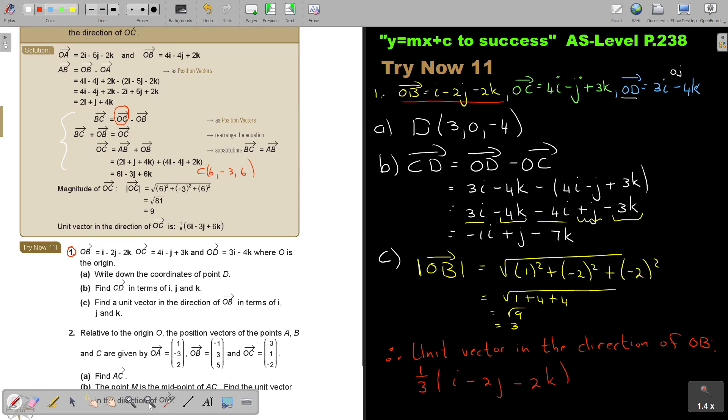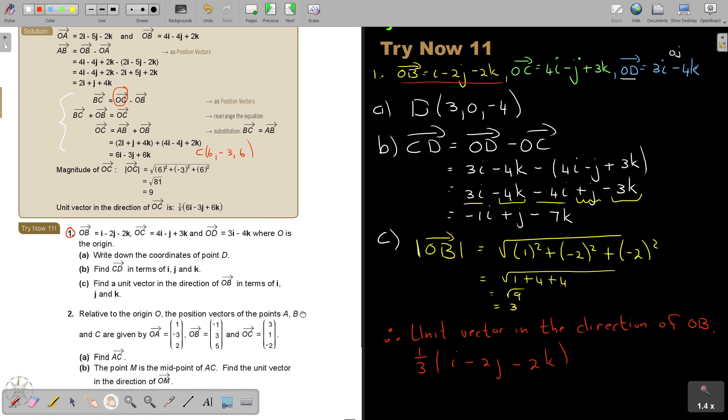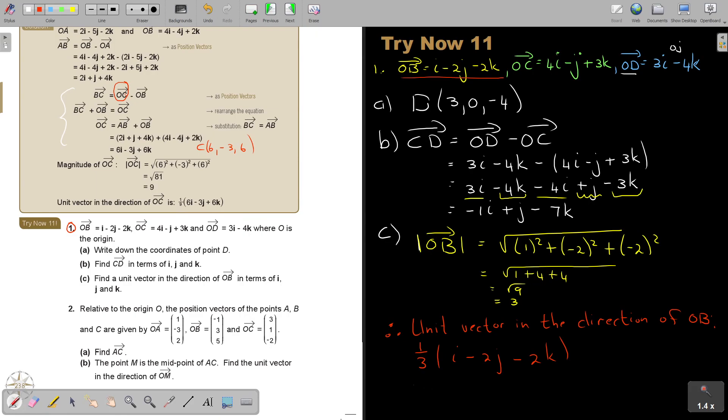You can leave it like this, or you can go a step further and write it as one-third i minus two-thirds j minus two-thirds k. And that will be the unit vector in the direction of OB.